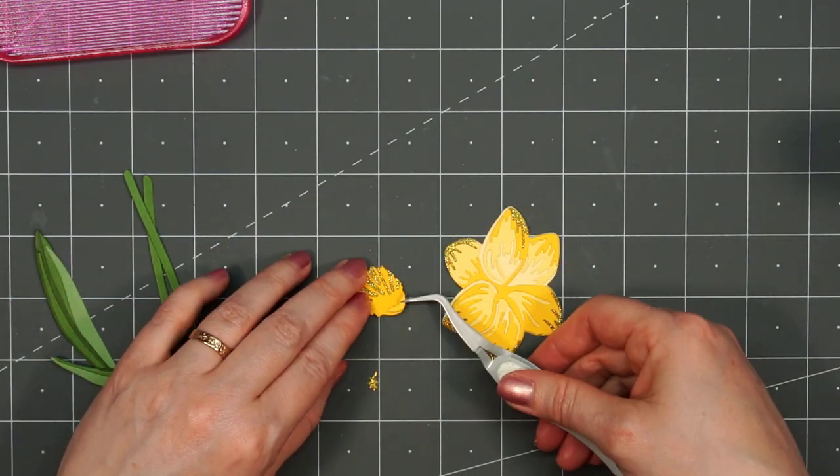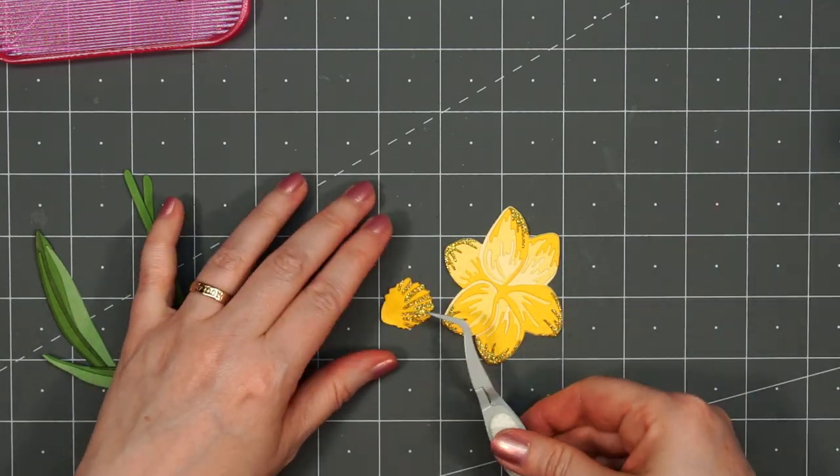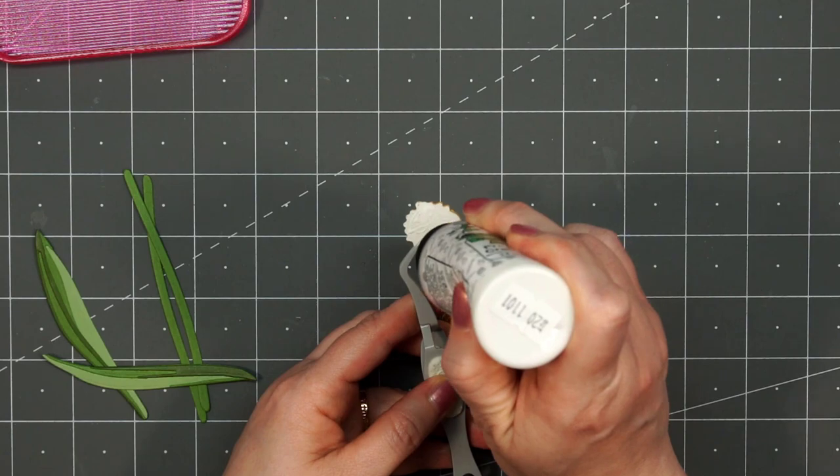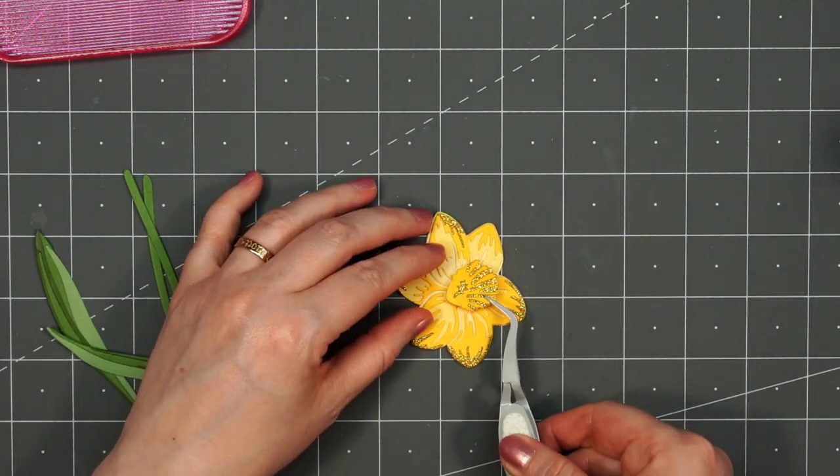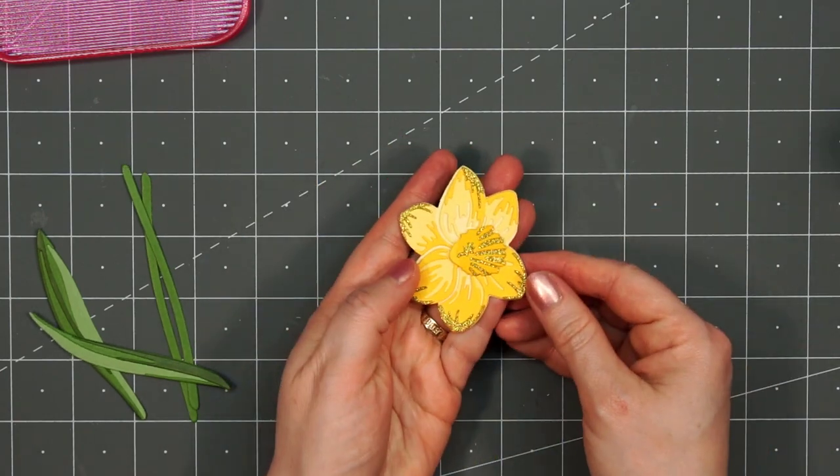I'm getting to the center piece of the flower. I'm not sure what that part's called. I've got just a few little layers. I'll put some liquid adhesive on the back and adhere it on top of that background part of the flower. Now it really looks like a daffodil.